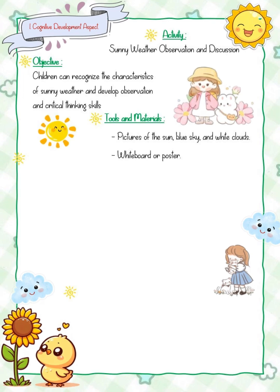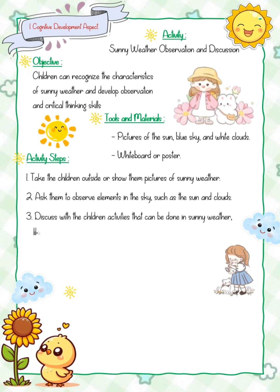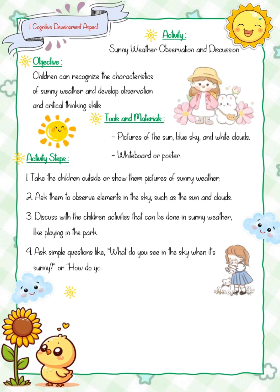Activity steps: one, take the children outside or show them pictures of sunny weather. Two, ask them to observe elements in the sky such as the sun and clouds. Three, discuss with the children activities that can be done in sunny weather, like playing in the park. Four, ask simple questions like 'What do you see in the sky when it's sunny?' or 'How do you feel when it's sunny?'